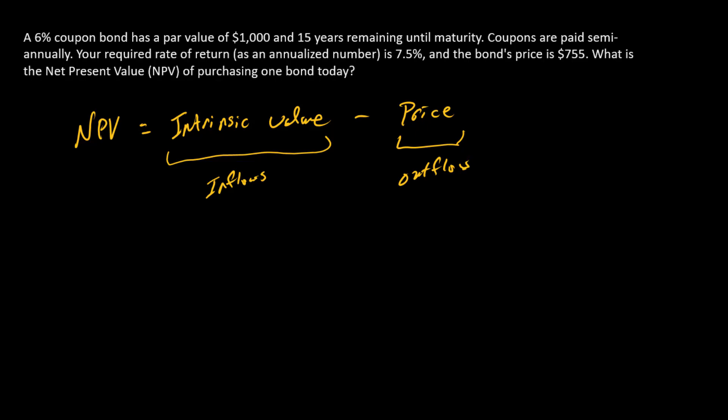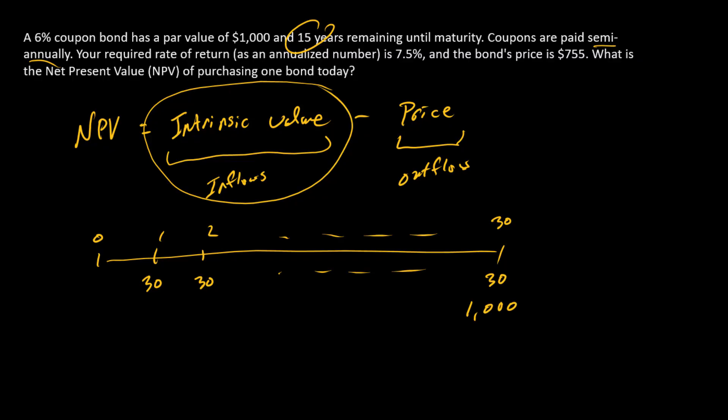We just want to use our standard bond valuation techniques to do this part first. We're going to calculate the intrinsic value or what the bond price should be. Notice we've got 15 years to maturity, but semi-annual payments, so we're going to have 30 of them here. We have a 6% coupon bond, so split into two semi-annual payments, that's going to be $30 all the way through. And then the par value is $1,000.